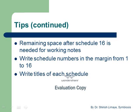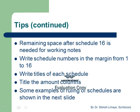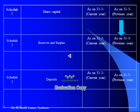Then write the titles of each schedule, then write titles to the amount columns. Some examples of ruling of schedules are shown in the next slide. Give titles to the schedules: first column — Schedule Number, second column — Title of the Schedule, third column — Current Year, last column — Previous Year. As you already know, the previous year column is a matter of presentation and nothing will be recorded there.